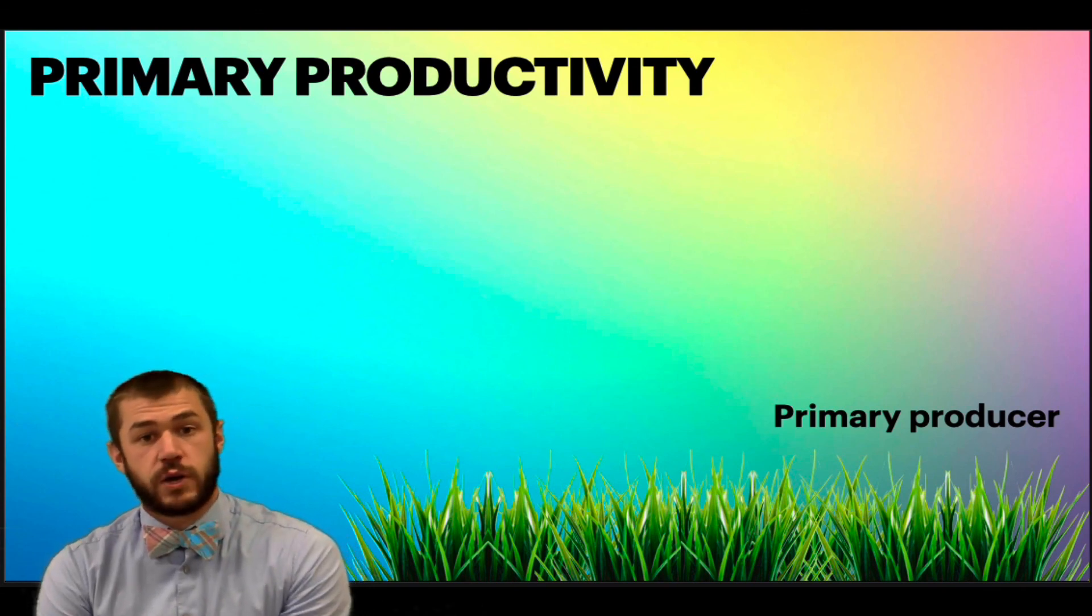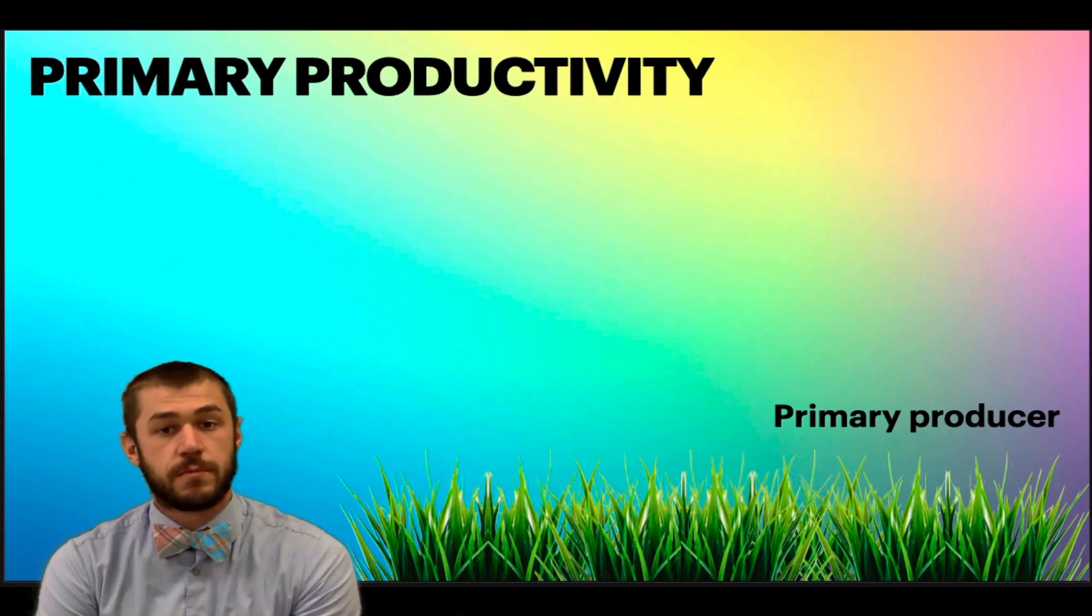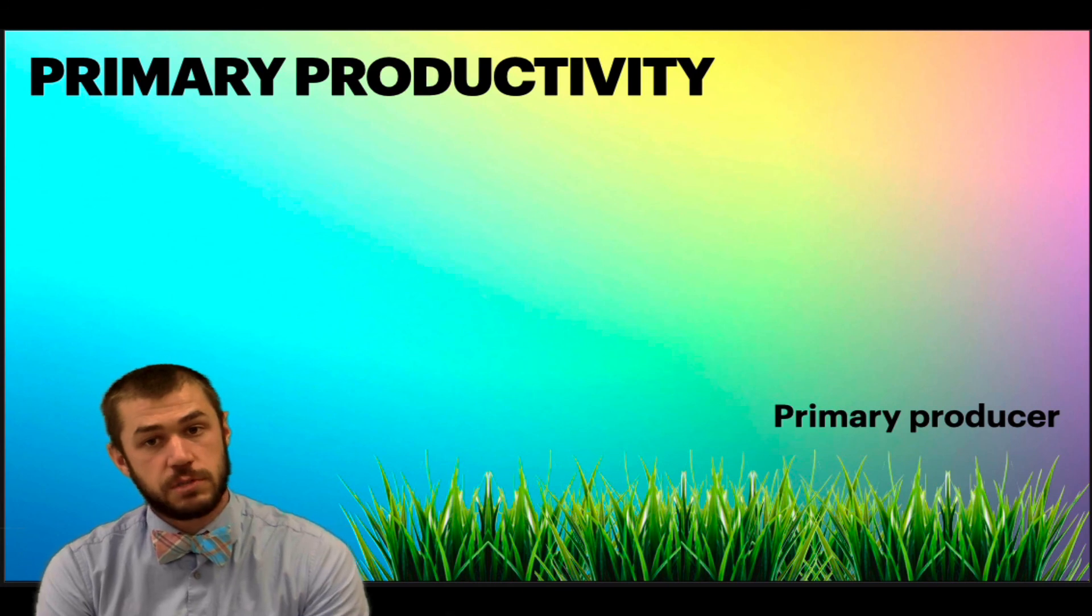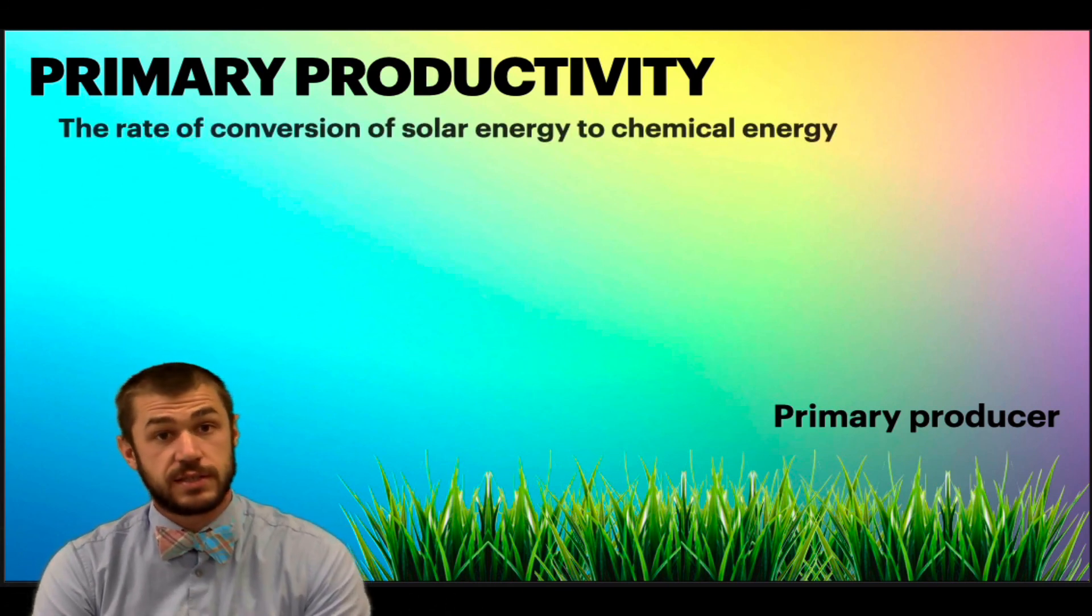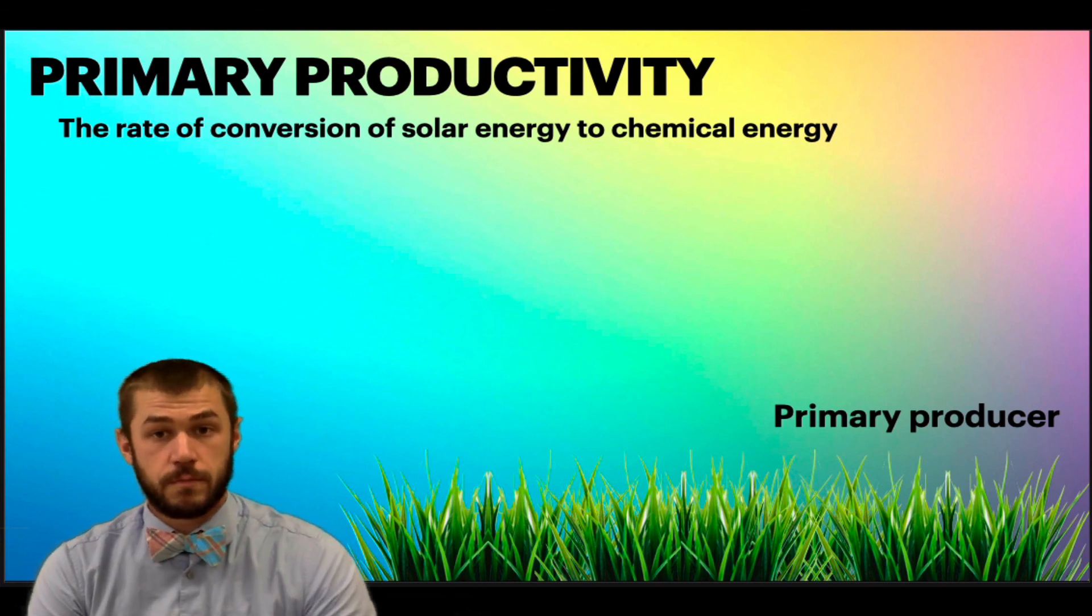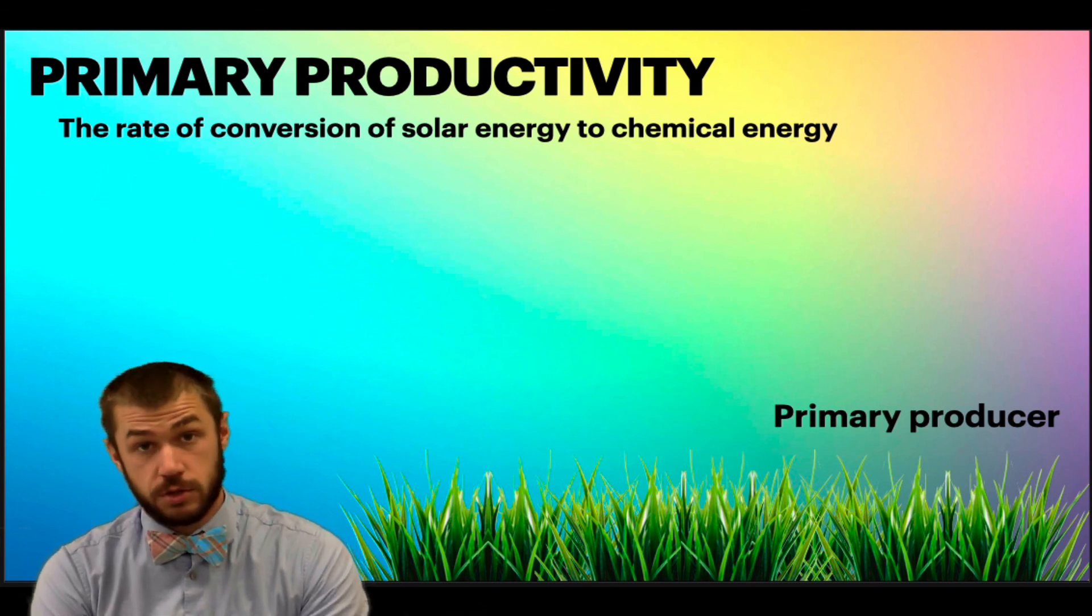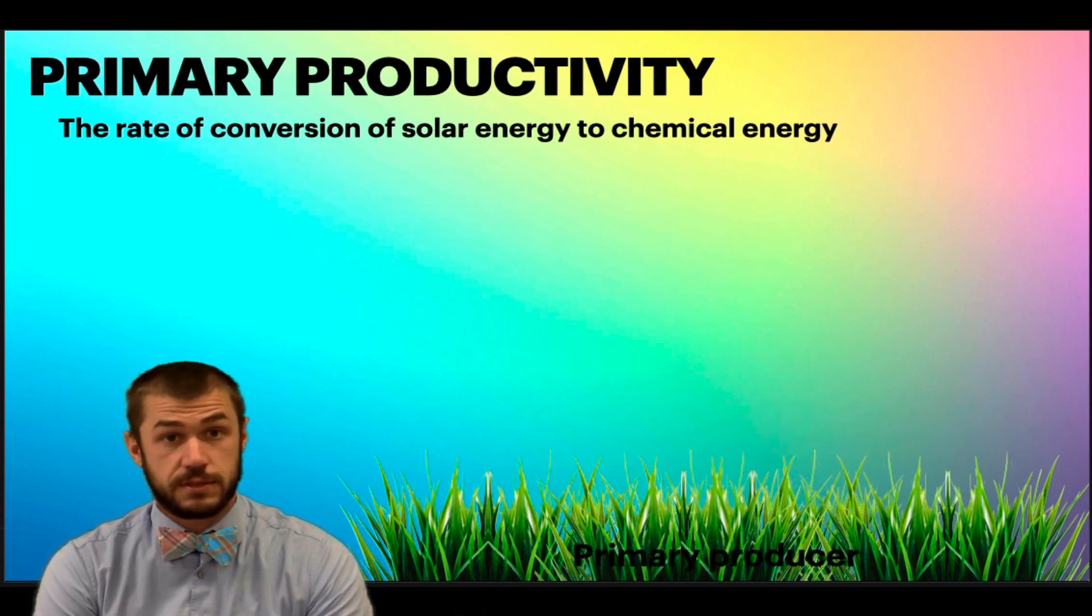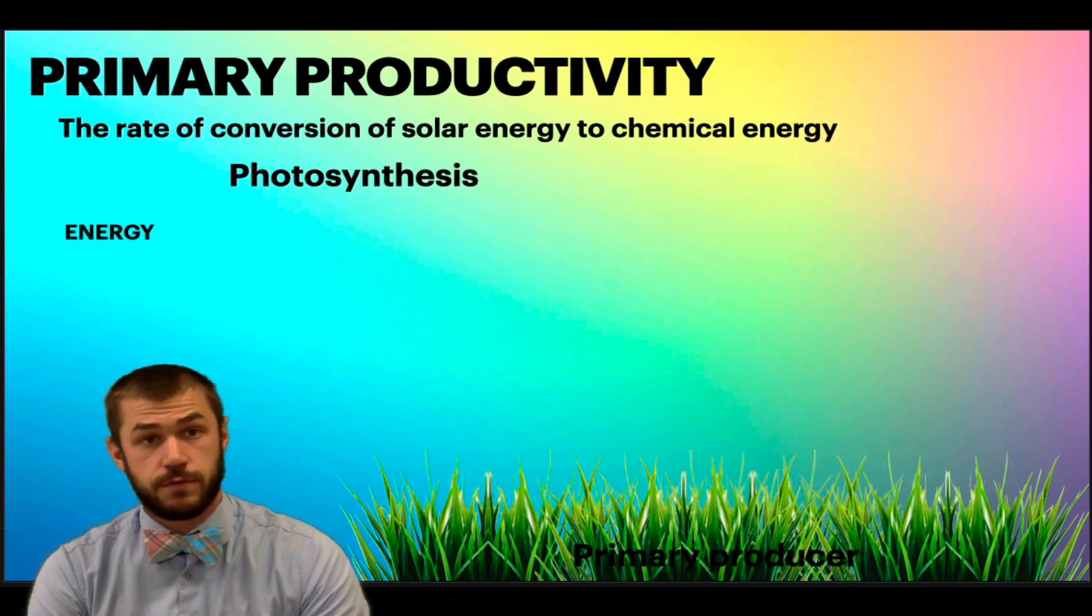Primary productivity is where that energy starts in the system. After the sun hits the grass, primary producers or any plant or algae are going to use that energy through photosynthesis to produce energy. So primary productivity is the rate of conversion of solar energy to chemical energy. That's going to come through this process of photosynthesis.